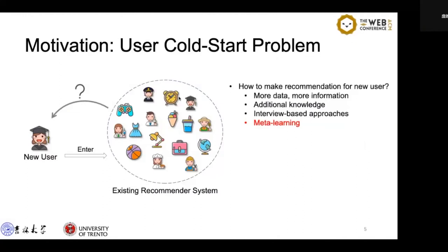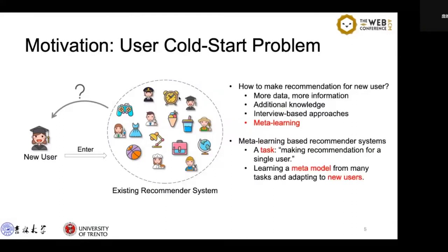MAML-based recommender systems can learn a common initialization for all users and adapt to new users reactively through gradient updates. Most of these methods follow two principles. First, they regard making recommendations for one user as a task.